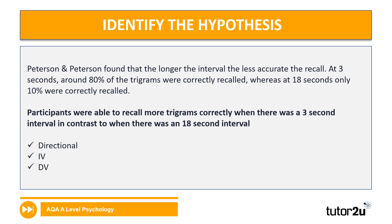For this one, we've selected a directional hypothesis: participants were able to recall more trigrams correctly when there was a three second interval in contrast to when there was an 18 second interval. We're concentrating on the dependent variable — how many trigrams they recall correctly — and the independent variable, which is the different intervals that were used.